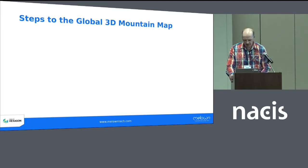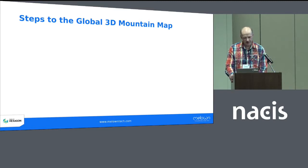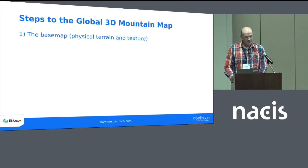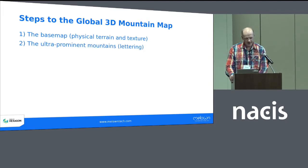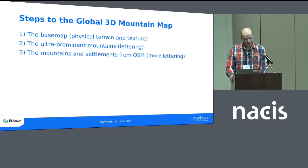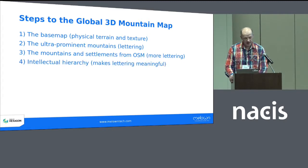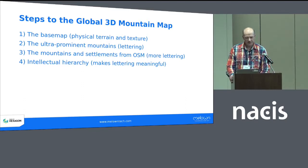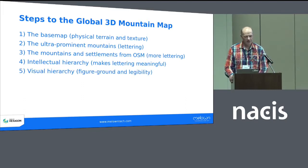In the remaining part of the talk, I'll go briefly through the steps taken to produce the global 3D mountain map. The first step is that we create a base map with the physical terrain and texture. Second, we add lettering for the ultra-prominent mountains. Third, we add more lettering based on OpenStreetMap for the remaining mountains. Fourth, we create an intellectual hierarchy which will make our lettering meaningful. And fifth, we provide a visual hierarchy to improve figure-ground and legibility of the map we are producing.